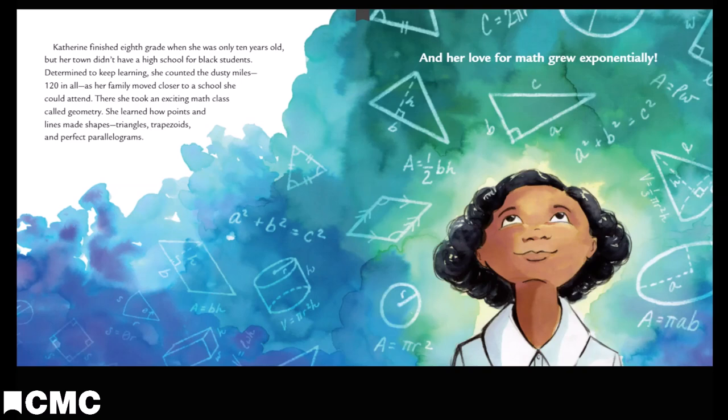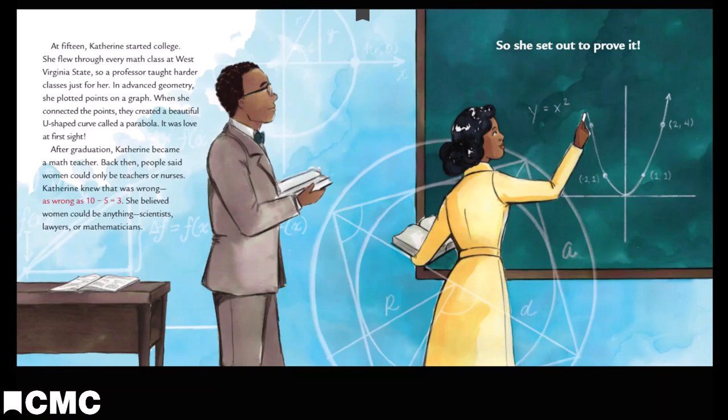At 15, Catherine started college. She flew through every math class at West Virginia State, so a professor taught harder classes just for her. In advanced geometry, she plotted points on a graph. When she connected the points, they created a beautiful U-shaped curve called a parabola. It was love at first sight.